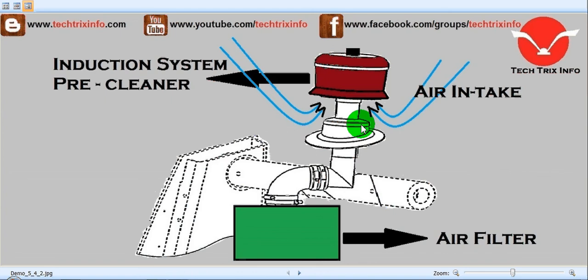Hi, good morning! Welcome to Tech Tricks Info, the engineering tutorial hub. Today we'll be learning about the induction system of a naturally aspirated engine — specifically a diesel engine. A naturally aspirated system means the engine breathes on its own: just as human beings breathe air from the atmosphere, automobile engines also need to suck in air from the atmosphere.